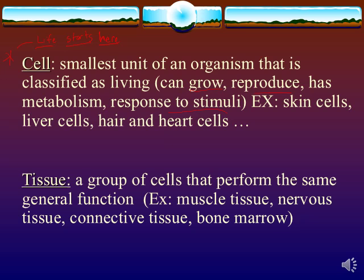When you put a bunch of cells together, that's where you get a tissue. Tissue is technically alive, though it's not independent. Different types of tissues are essentially groups of cells that perform the same general function. There's muscle tissue, nervous tissue, connective tissue — bone marrow is considered a tissue. So all these different tissues are just groups of cells that perform the same general function.